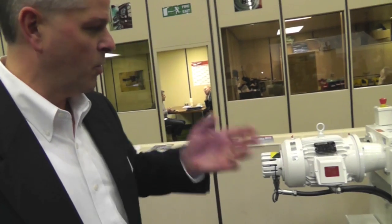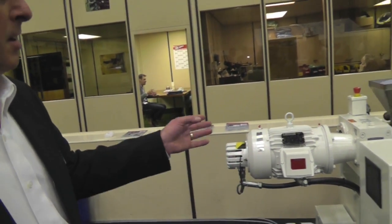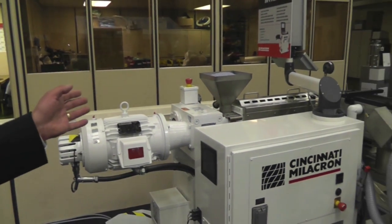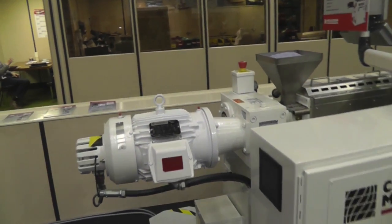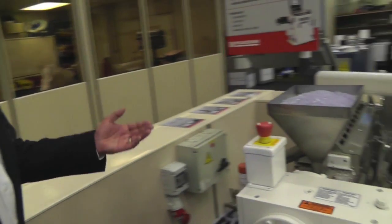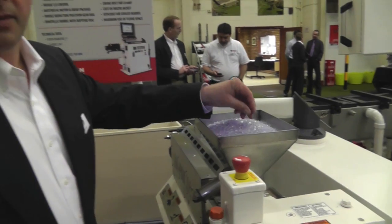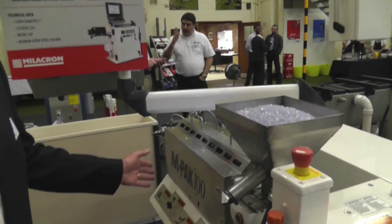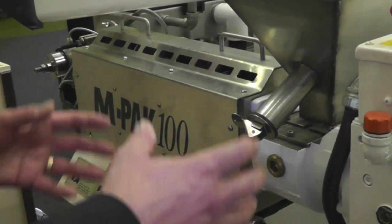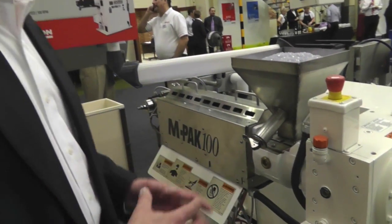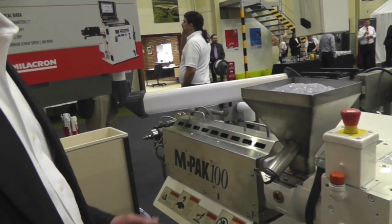My name is Mike Gahan with Cincinnati Millacron based out of the US and we're here at our open house in the UK. What we have here is what we call an MPAC 100 medical extruder. We are processing a flexible medical grade PVC, non-halogenated. The machine is set up for medical applications with stainless steel covers and metallurgy suitable for clean room applications.